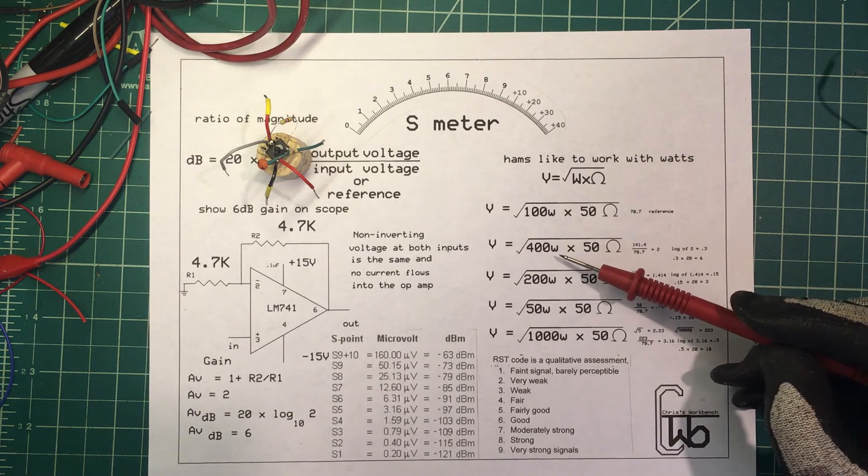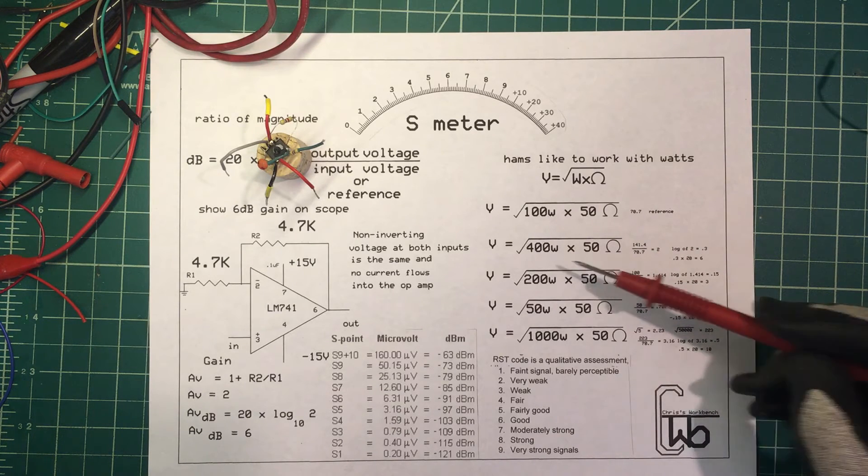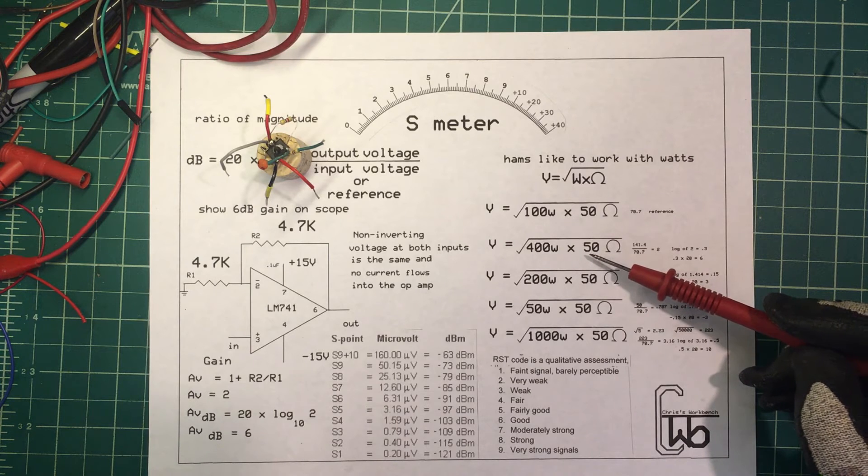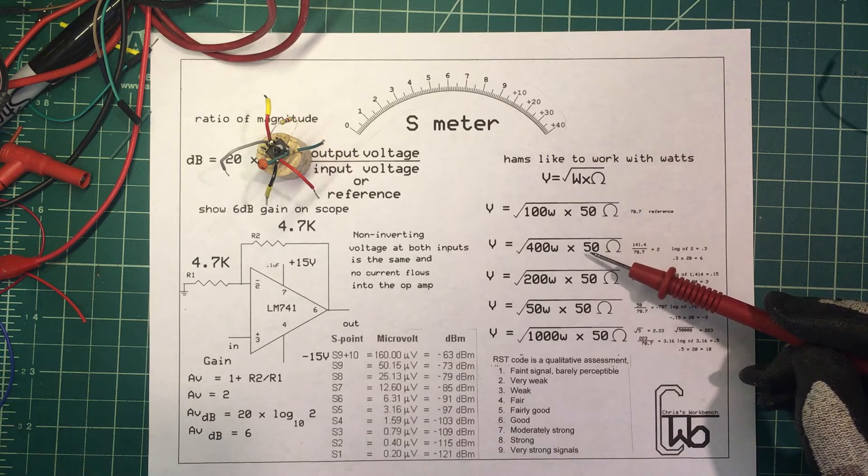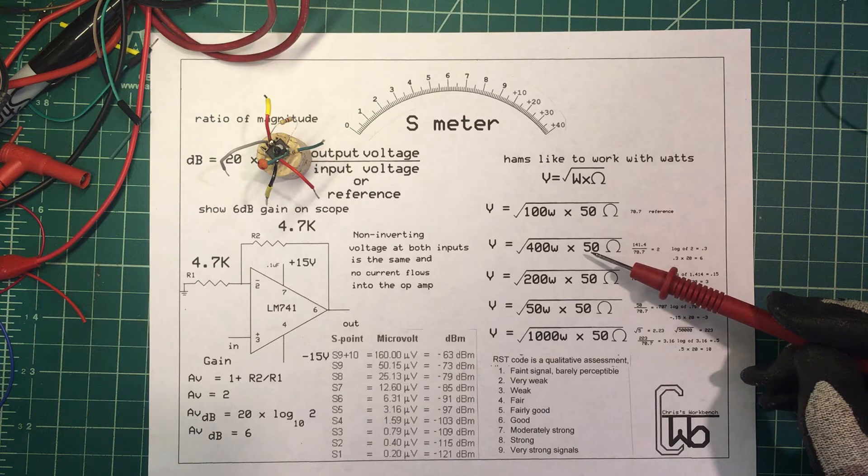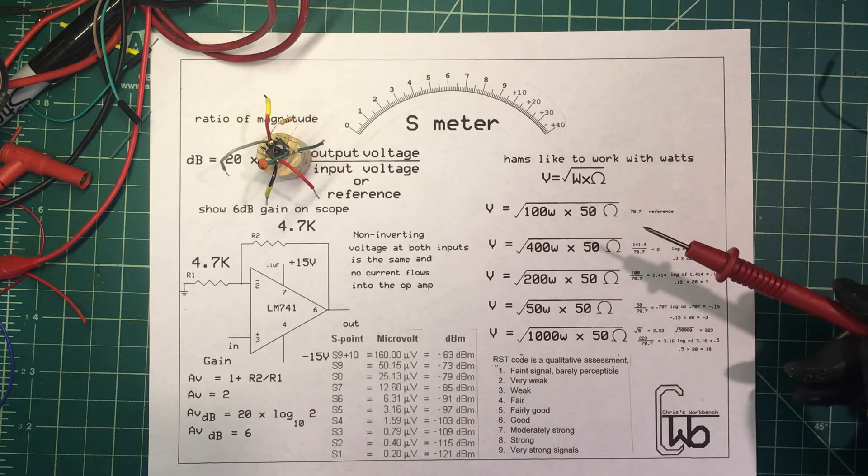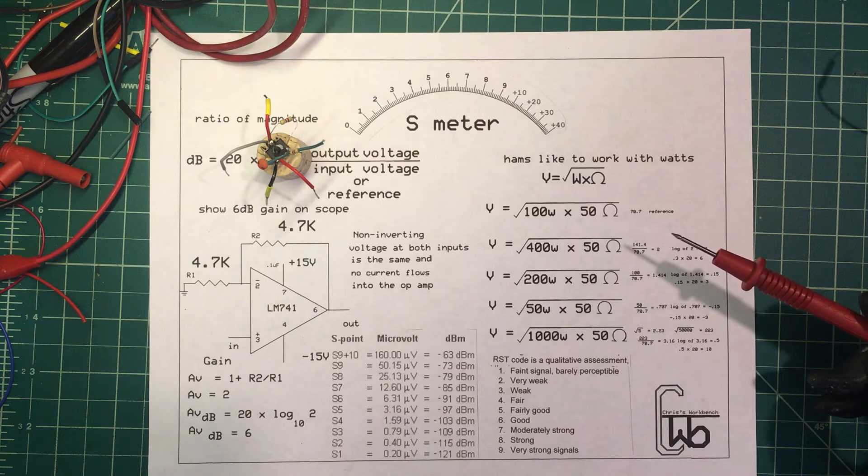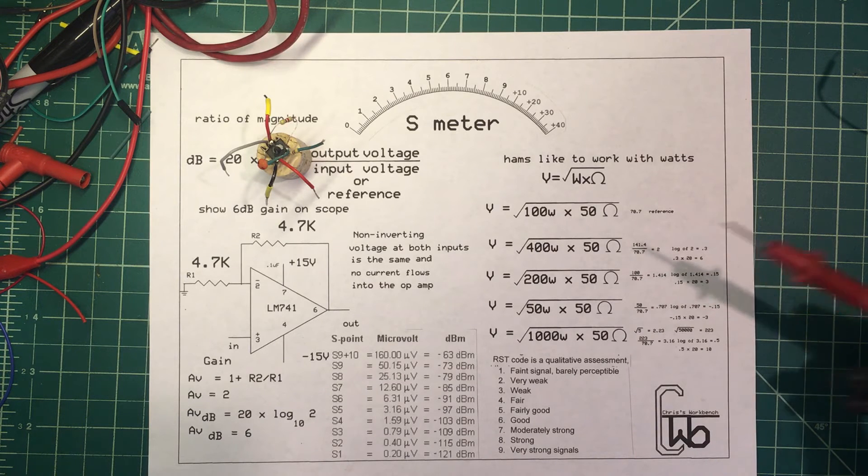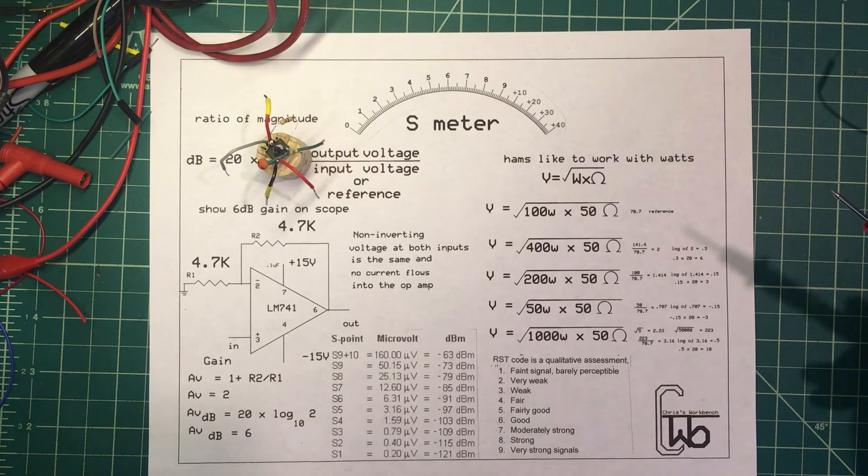Let's take the amp and crank it up to 400 watts. Now 400 times 50, that's 20,000. We know the square root of 2 is 1.414, so that's got to be 141.4 volts. We just doubled our voltage. Our ratio is 2. Log base 10 of 2 is 0.3 times 20 - 6 dB. We're up 6 dB, we're up 1 S unit.